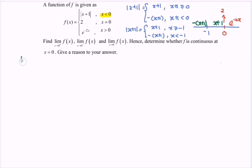Find the limit when x approaches 0 from the right for the function f(x). From the right, we have e to the power of negative 2x. If we substitute 0, we get e to the power of 0, where the value of y approaches 1.